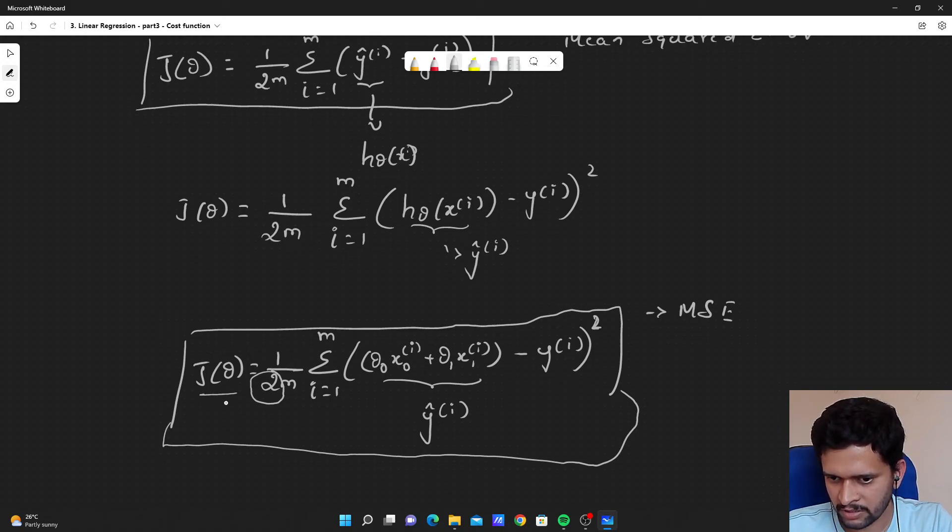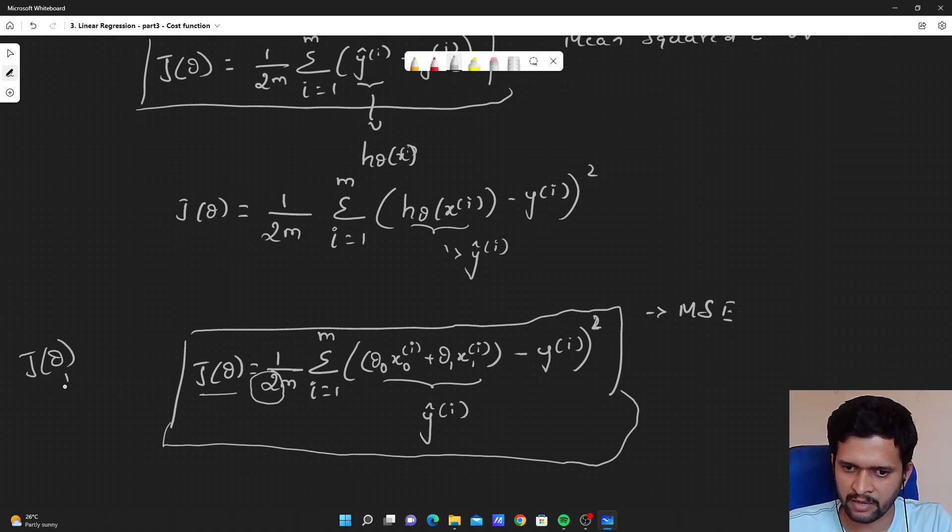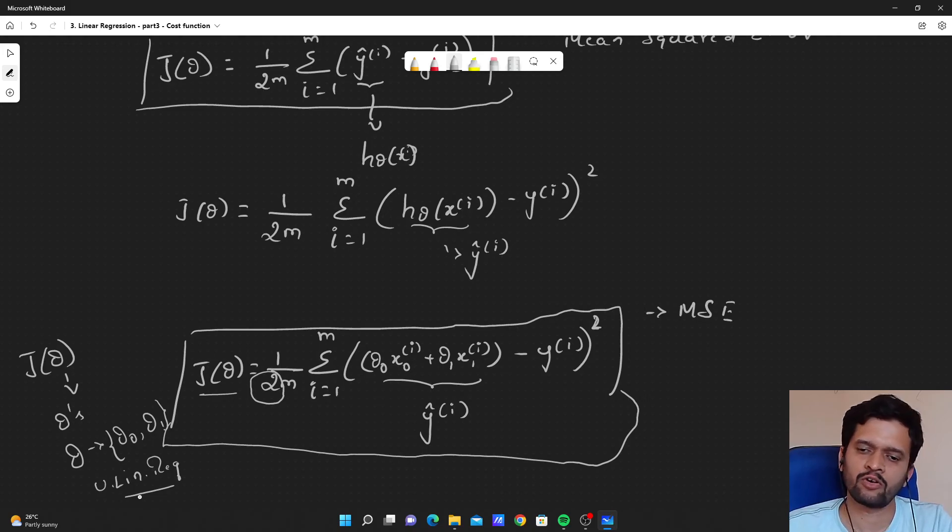You just remember this j theta, the cost function is a function of theta. It is parameterized by thetas. This big theta here consists of theta 0 and theta 1 in case of univariate linear regression. This is very much important in order to understand gradient descent algorithms. That is all for this video. Hope you understood the concept of loss and cost function. If you have any question on this particular equation, on this MSE mean squared error cost function, please reach out to me in comment section. I will try to answer you. Hope you all understood it. Till we see you next time. Enjoy the learning. Bye bye.